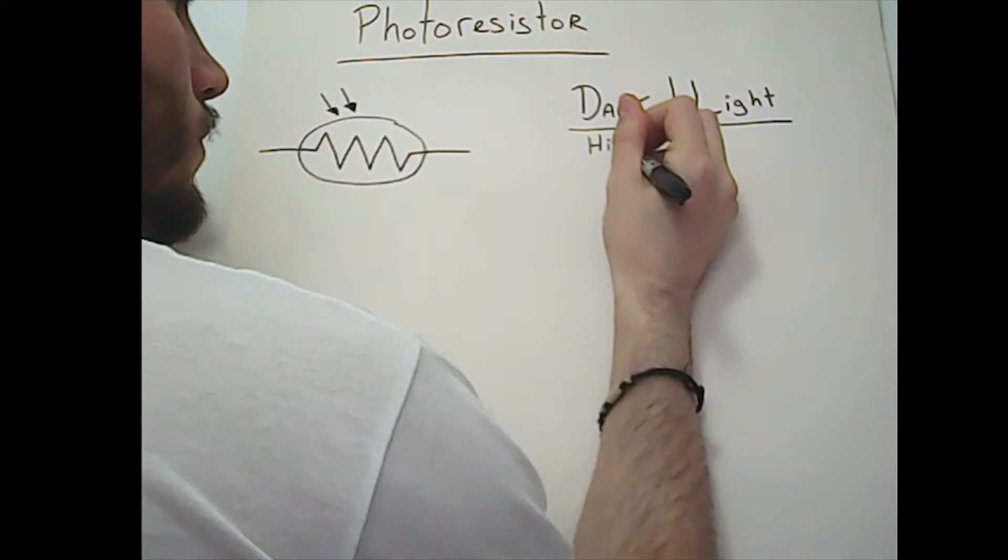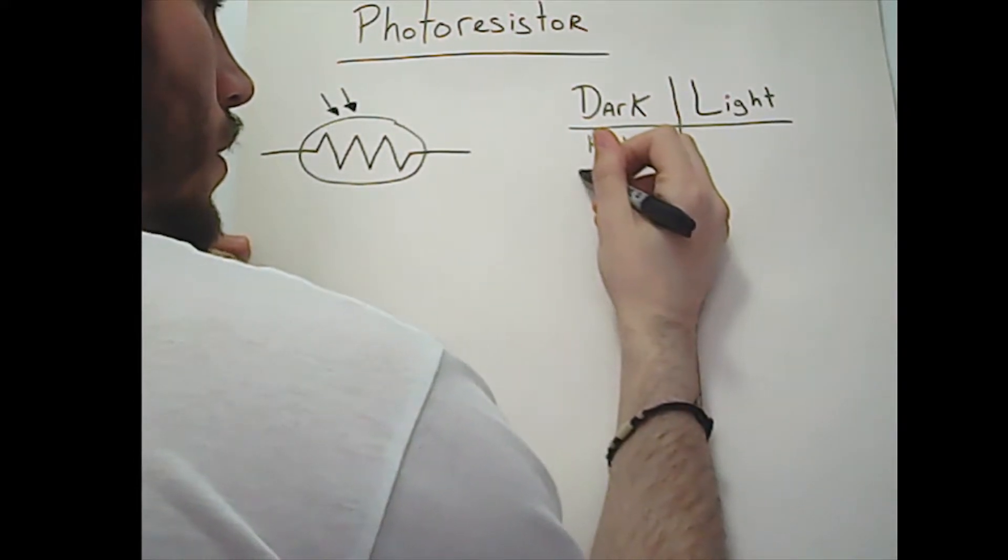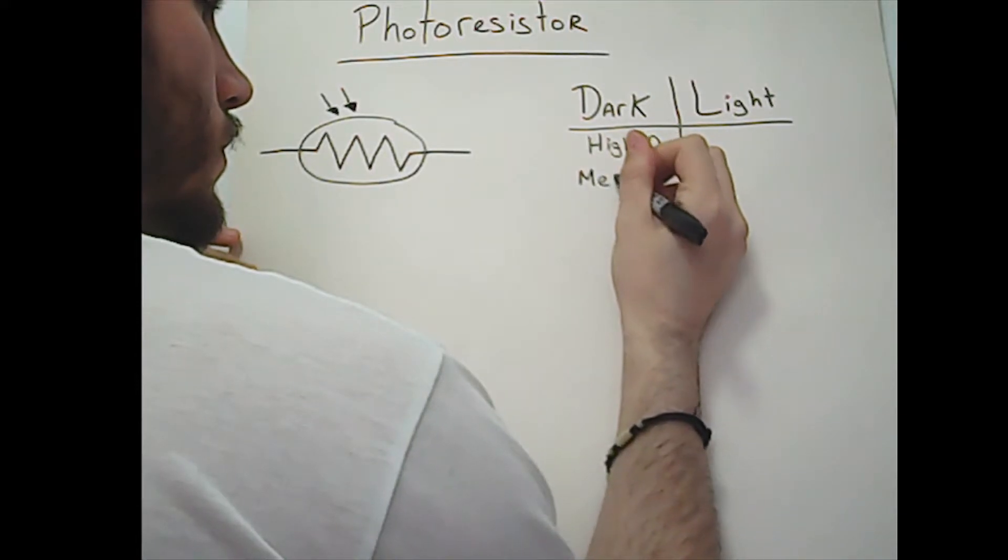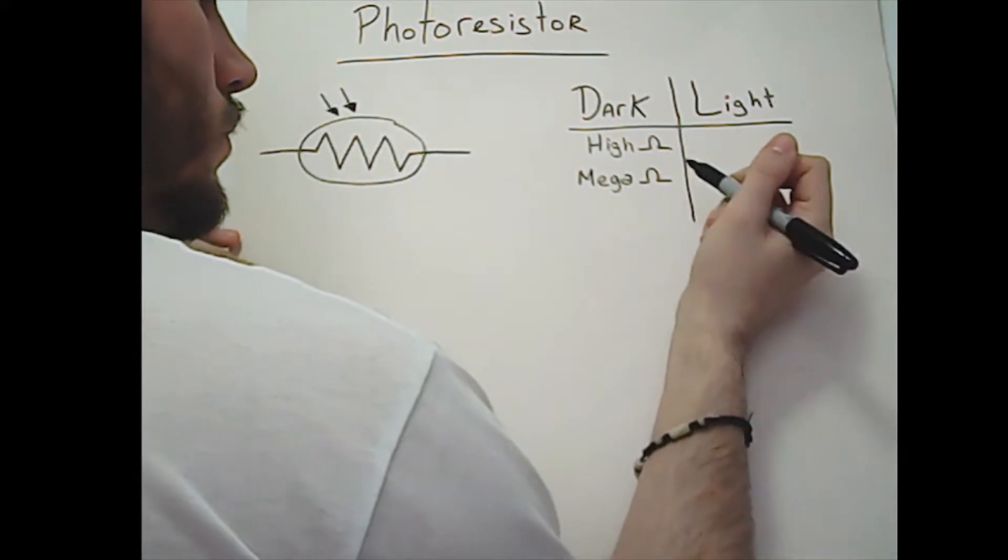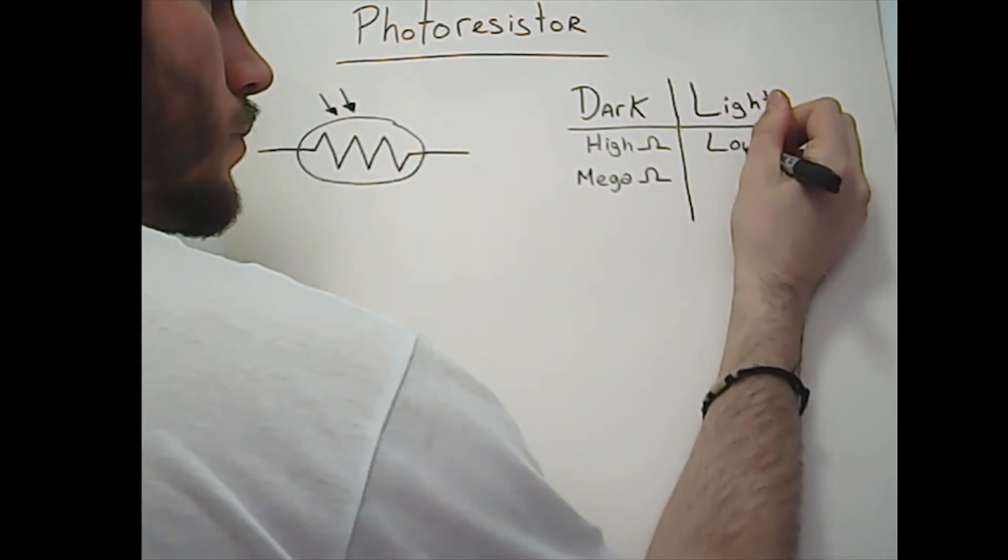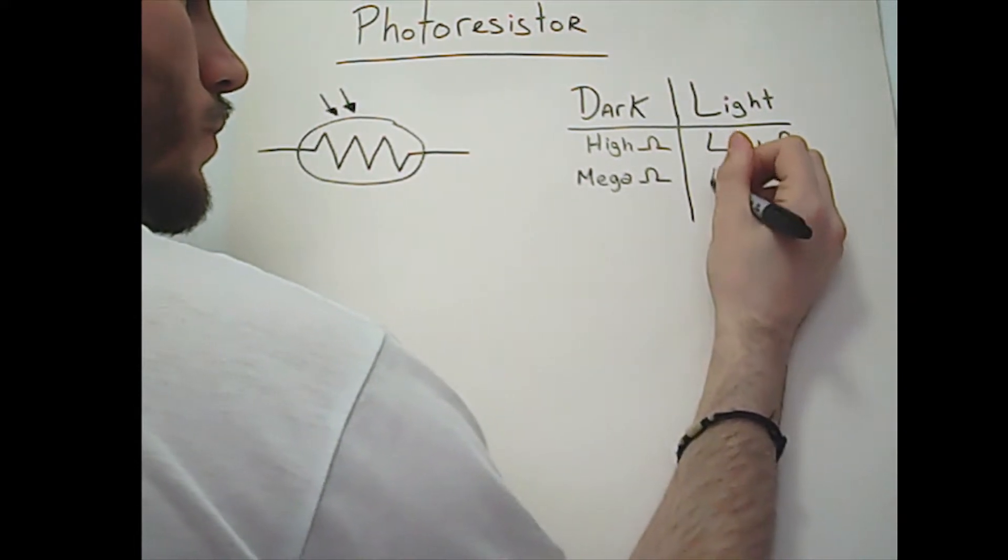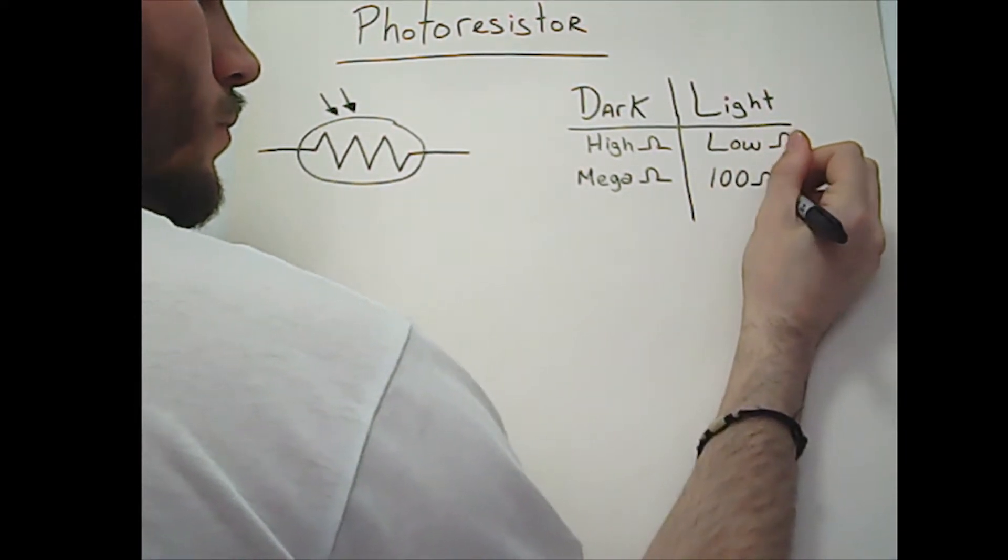There are a ton of these resistors, and their values are wide and vary a lot. Basically, in the dark, this component will have rather high resistance values in the range of mega-ohms. In the light, its resistance will drop pretty low and may go down to hundreds of ohms.